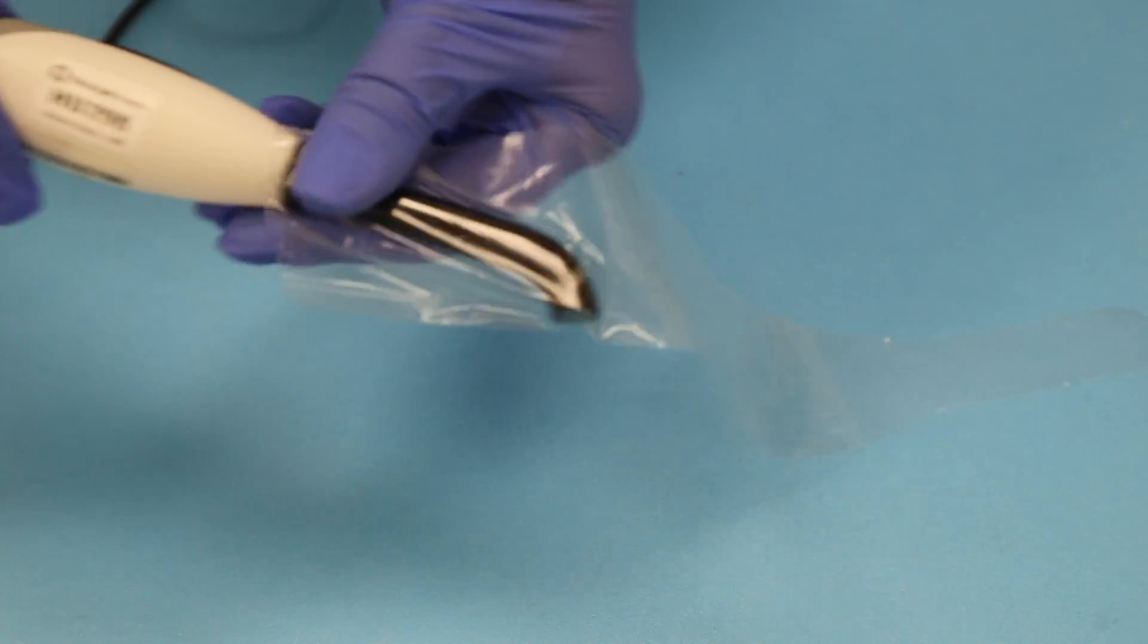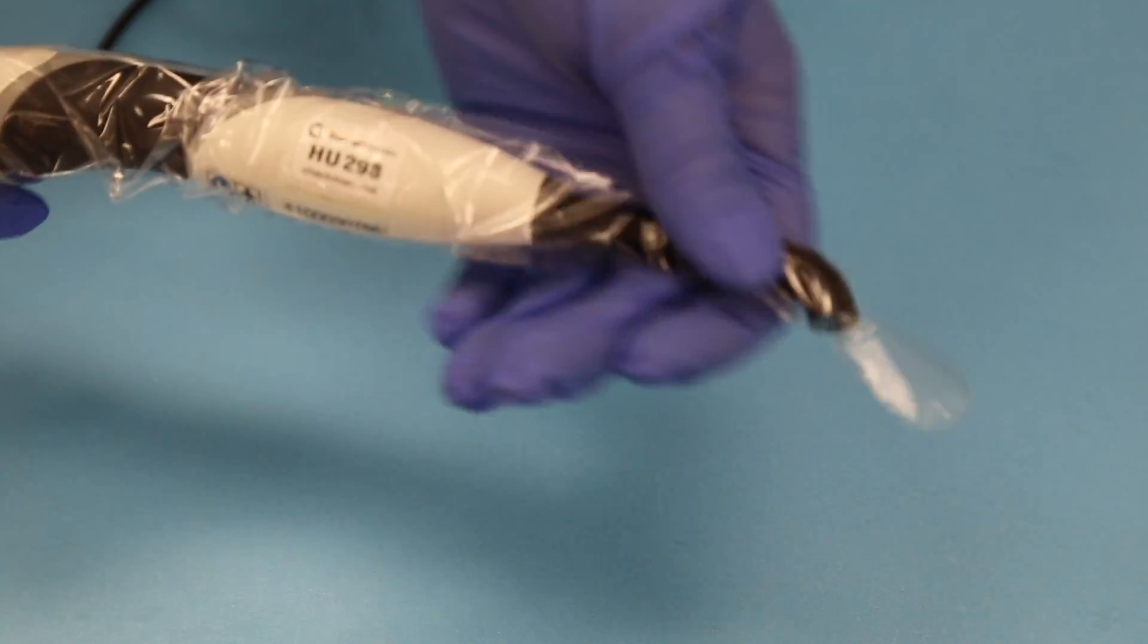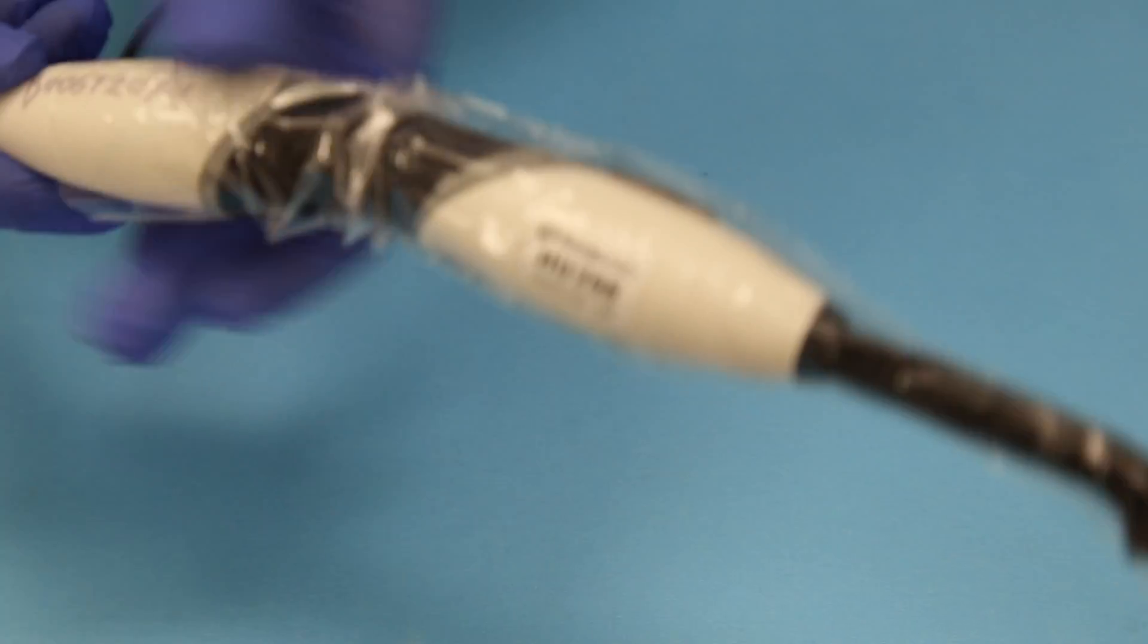Otherwise, the sleeve will stick to the light and it will be very hard to put on. Here we can see that the style sleeve fits the light snugly and covers all the buttons.